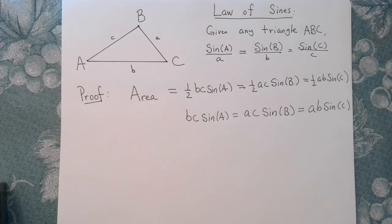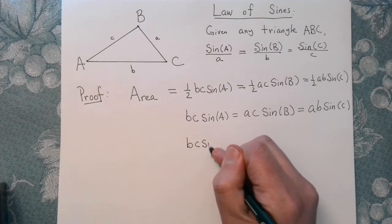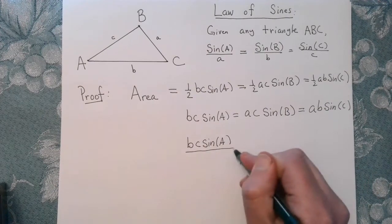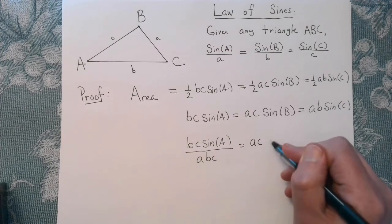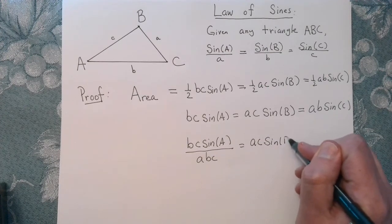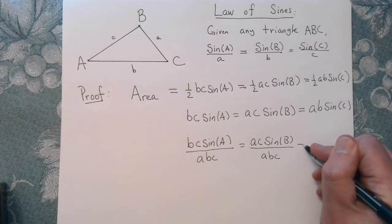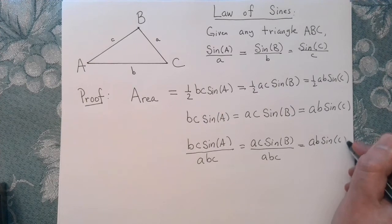The next thing I can do is divide everything by A, B, and C. So dividing this by A, B, and C, I'm just going to do the same thing here. I'm going to take this quantity and divide it by A, B, C. And then lastly, I'm going to take this quantity and divide it by A, B, and C.